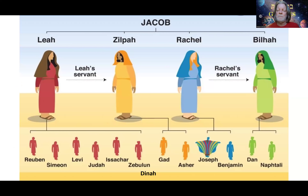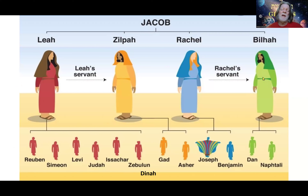Here we've got the four women who were an important part of Yaakov's life — two legitimate wives and then two maidservants. In some places the maidservants are called concubines, in some places wives. I would categorize them as second-level wives. The two maidservants gave birth to two sons each: Gad, Asher, Dan, and Naphtali. In our lesson for today, Yosef is going to be spending some time with them.